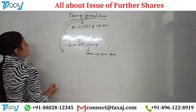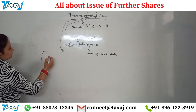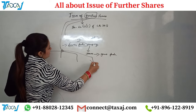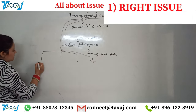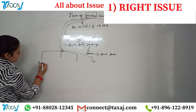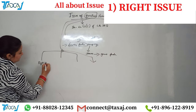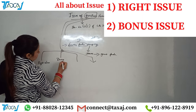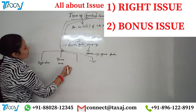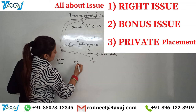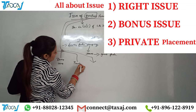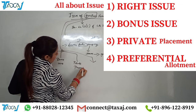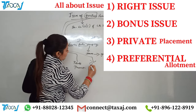So this is the issue of further shares. You can issue shares in four forms: first is rights issue, second is bonus issue, third is private placement, and fourth one is preferential allotment.